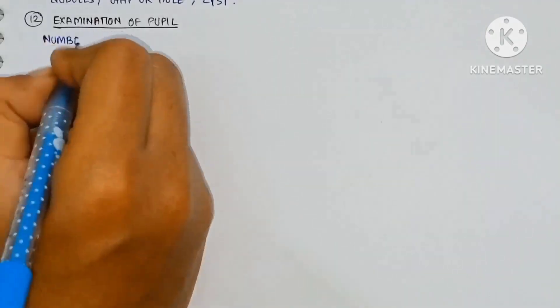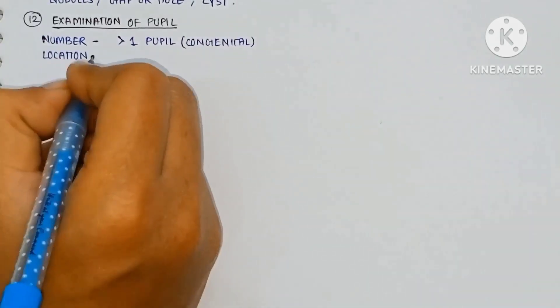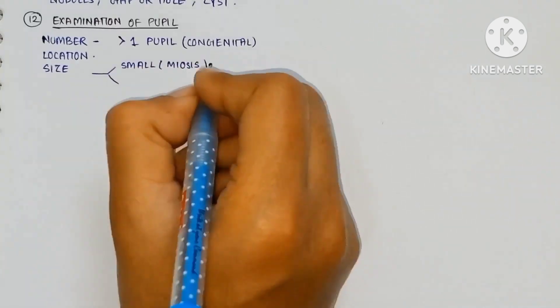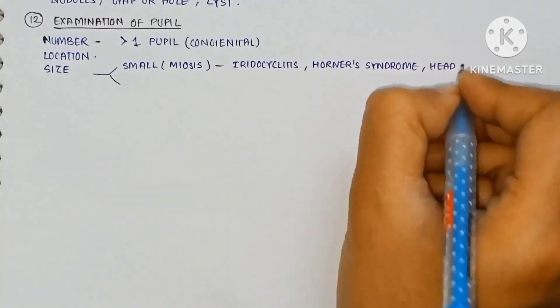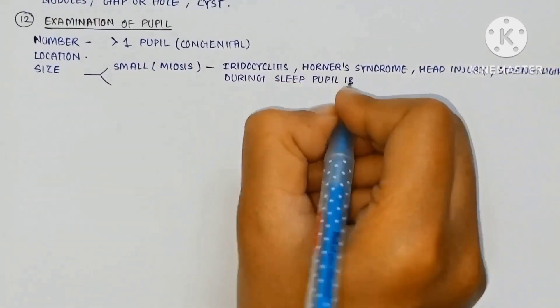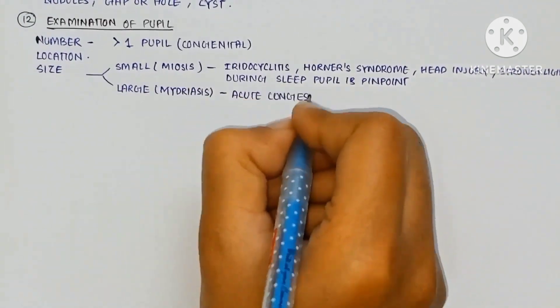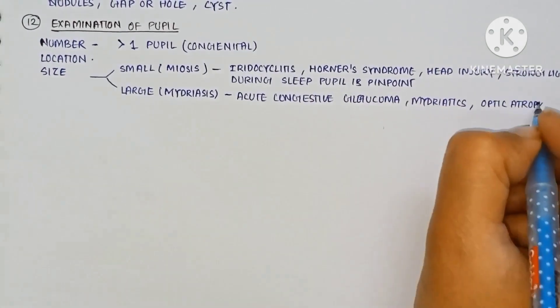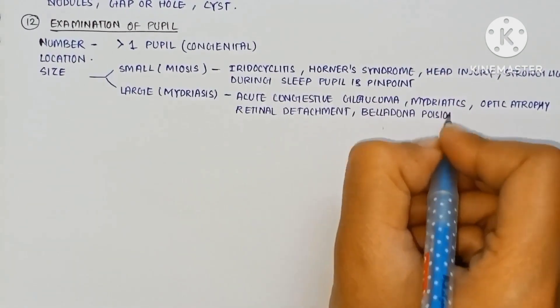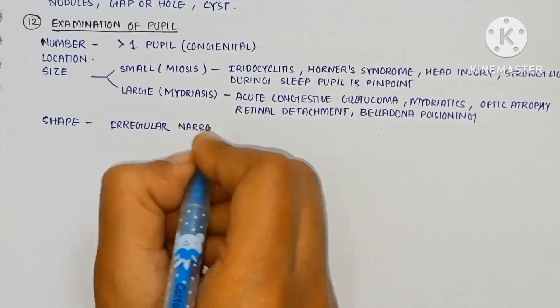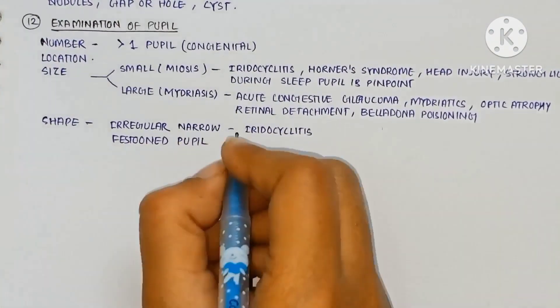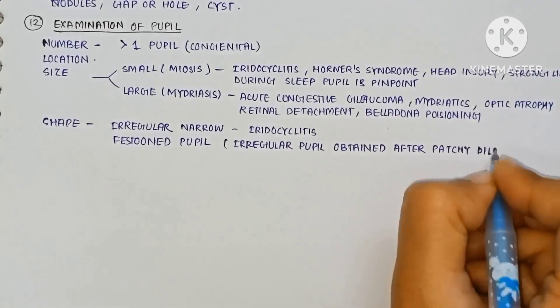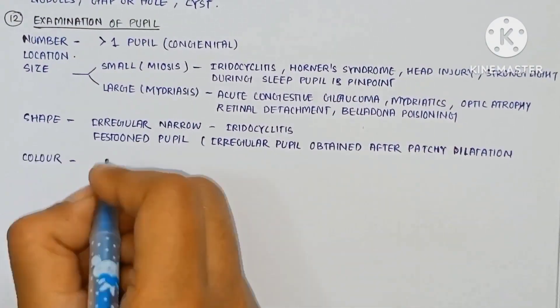Examination of the pupil. The number is more than one pupil in congenital. Size may be small in miosis, iridocyclitis, Horner syndrome, heart injury, strong light during sleep, pupillary pinpoint. Larger in mydriasis, acute congestive glaucoma, mydriatics and optic atrophy, retinal detachment, belladonna poisoning. The shape is irregular or narrow in iridocyclitis, atrophic pupil, irregular pupil obtained after patchy dilatation.